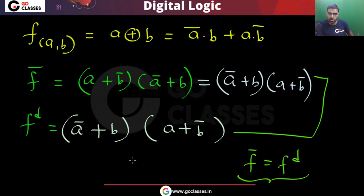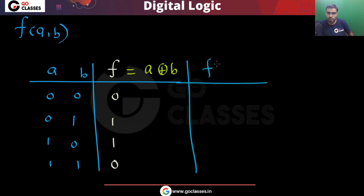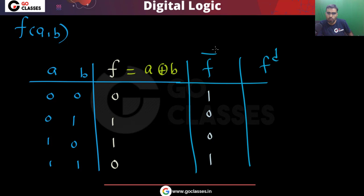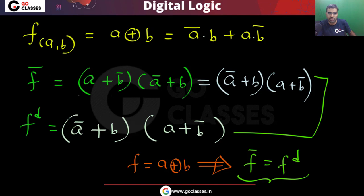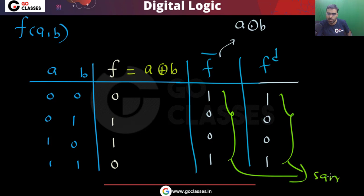For which function? For a XOR b. So for this function, f complement is same as f dual. The f complement is the XNOR function, and f dual is also the same. For this function f, you can see that f dual and f complement are both the same.